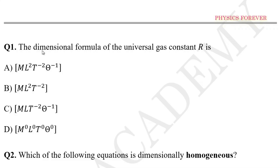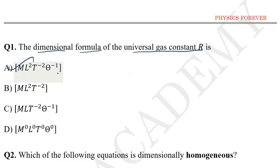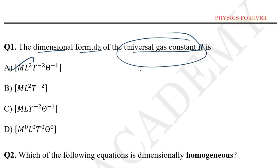Question Number 1: The dimensional formula of the Universal Gas Constant R — the correct option is R. We have to remember this one. These are the most important. Universal Gas Constant and Planck Constant — sometimes there should be questions asked like this.